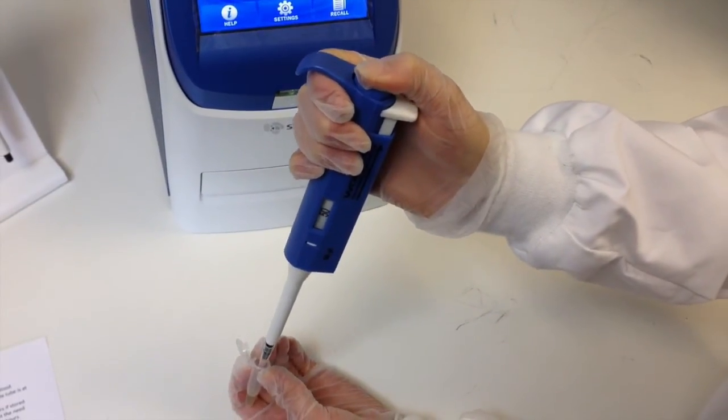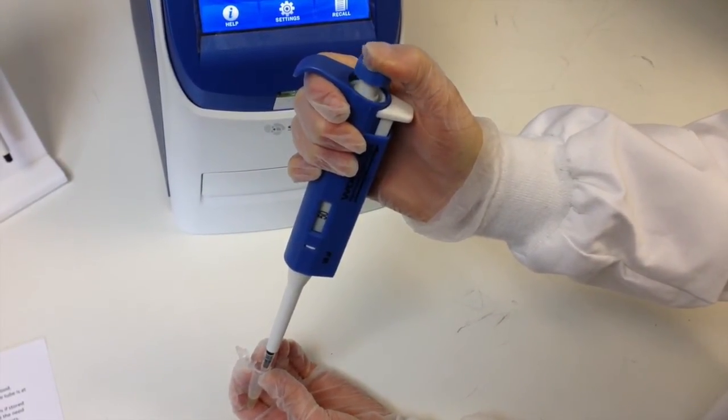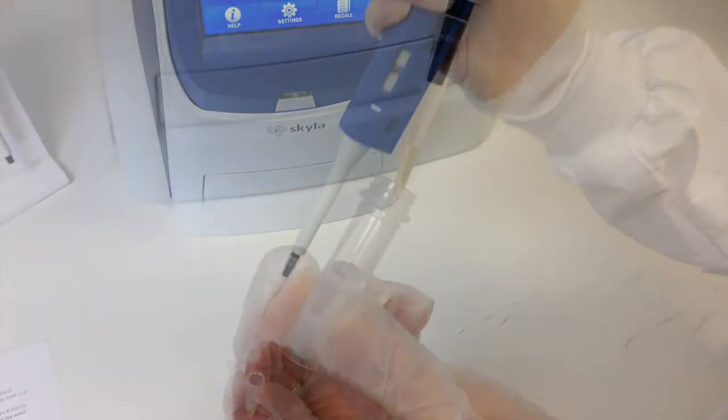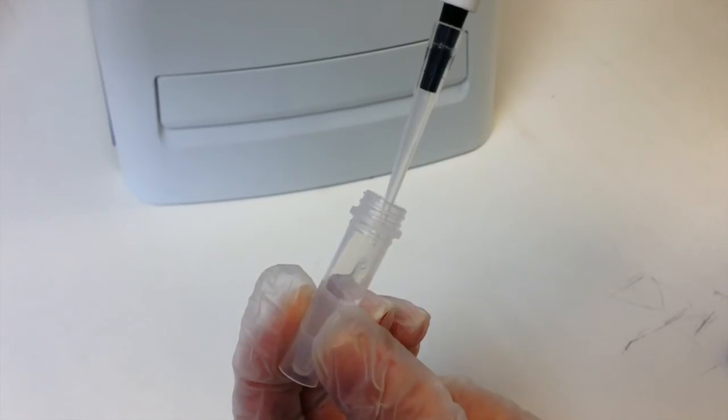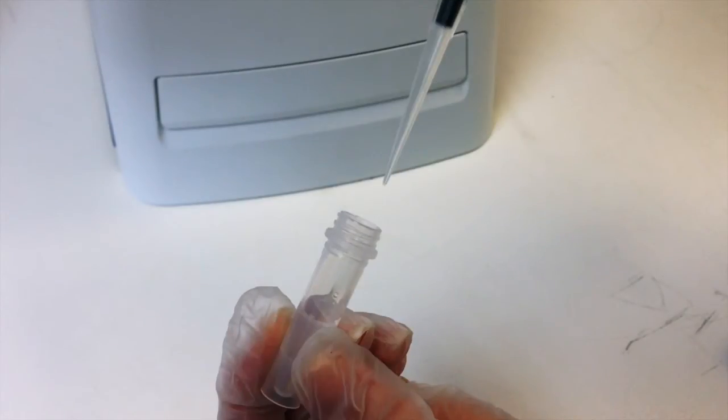Using the 50 microliter pipette provided, transfer 50 microliters of the sample into the diluent tube using correct pipetting technique. Do not let the pipette tip touch the surface of the diluent and dispel the sample slowly down the side of the tube. Do not release the plunger until the pipette is clear of the tube.